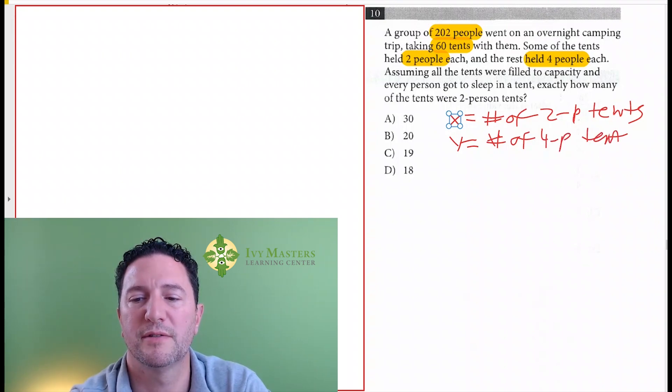We could say y equals a number of four-people tents. In that case, x plus y is going to be 60.